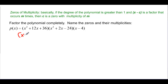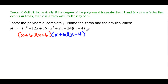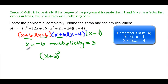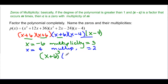Now factor completely and name the zeros and their multiplicities. Factoring the first part gives (x + 6)(x + 6). The second part factors as x(x + 6)(x - 4). So we have (x + 6) appearing three times total, meaning x = -6 with multiplicity 3, which we write as (x + 6)³. We also have (x - 4) appearing twice, giving x = 4 with multiplicity 2, written as (x - 4)².